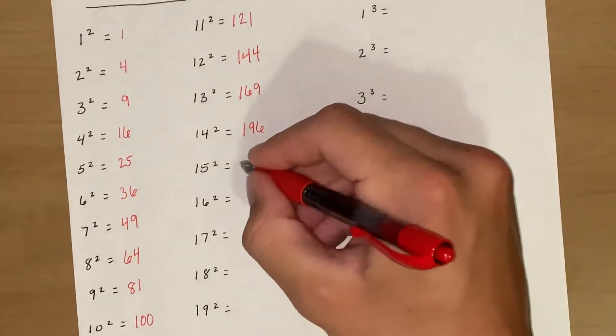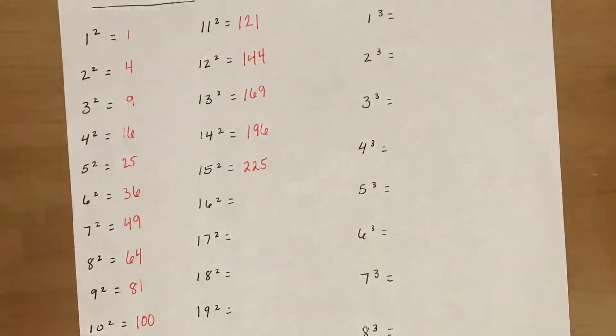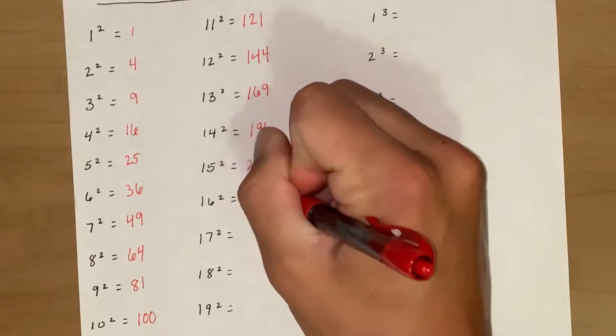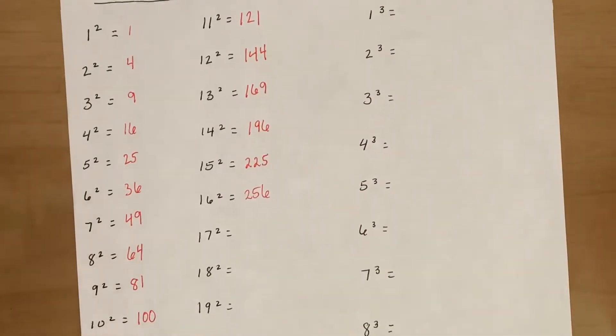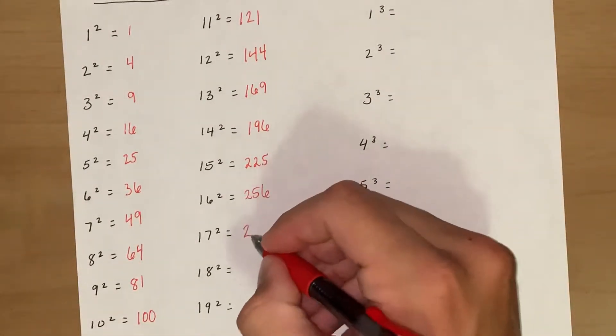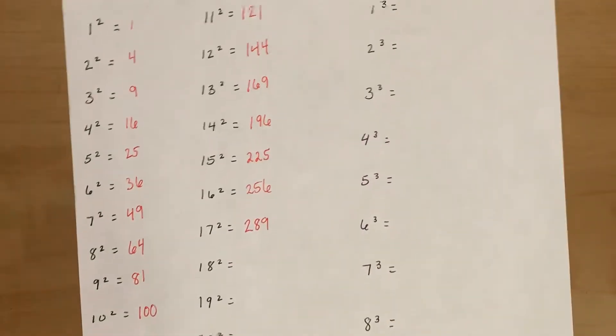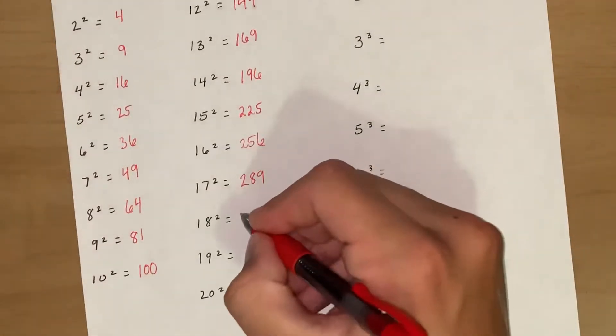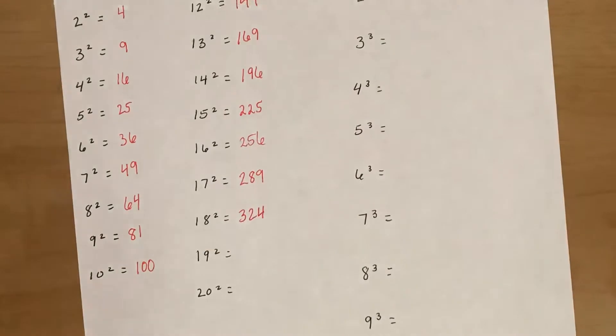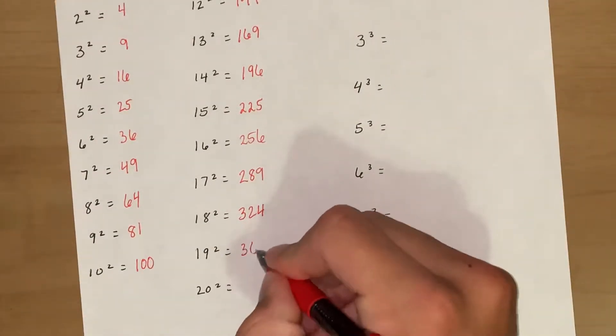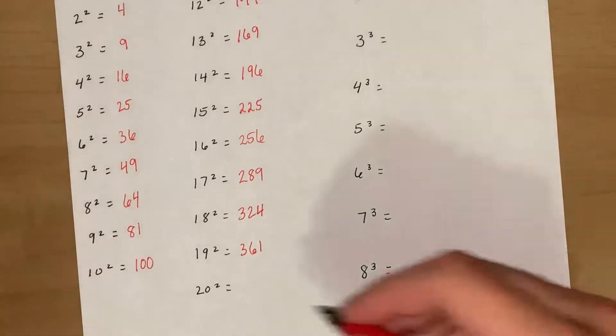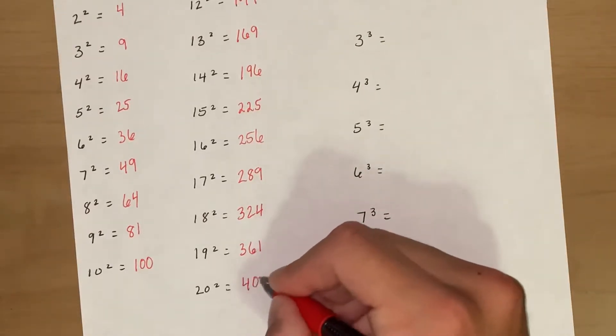15 squared 225, 16 squared 256, 17 squared 289, 18 squared 324, 19 squared 361, and 20 squared would be 400.